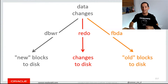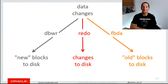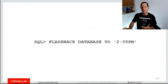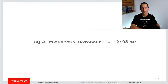That's where we use the flashback database archive. It's another background process and it writes old blocks to disk. Once that's in place, the actual command to take a database back to any point in time is fairly simple — it's FLASHBACK DATABASE TO 2:05 PM.